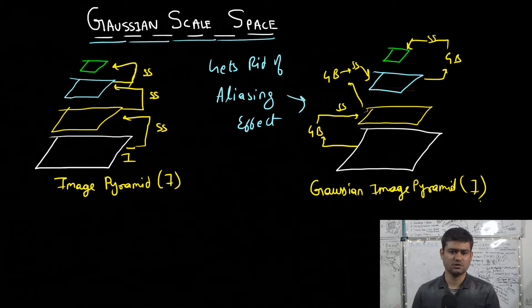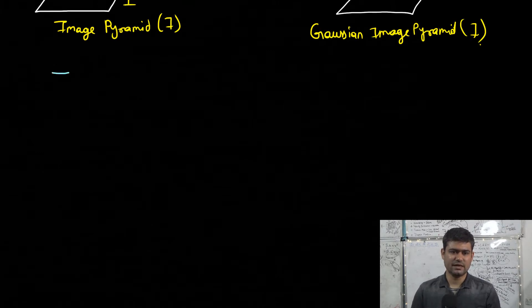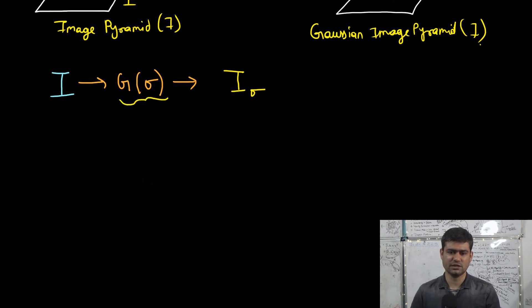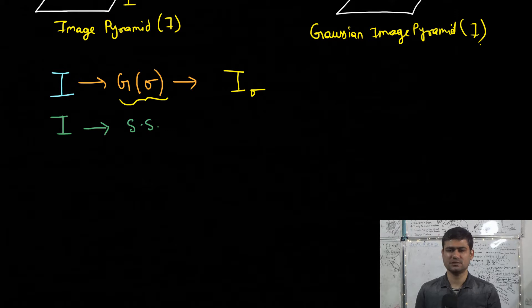Now we will discuss the concept of Gaussian scale space. If we take an image I and apply Gaussian blur with standard deviation sigma, we get the smoothed version denoted I subscript sigma. Similarly, we can apply uniform sub-sampling by a factor of 2 and, if we resize the image back to the original dimensions, we denote this image as I subscript ssr (sub-sampled resized).